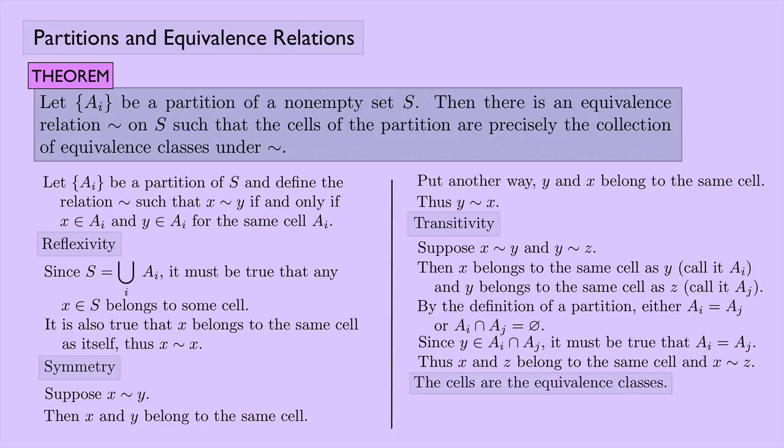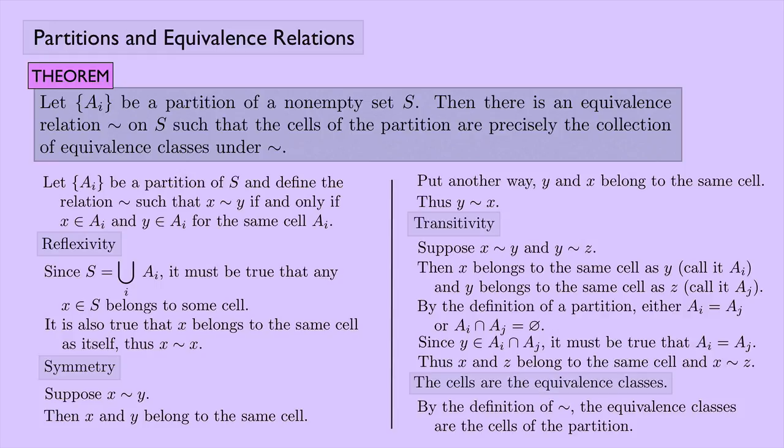One last thing: we should show that the cells are the equivalence classes. This is pretty easy — if you look at the definition of the relation we started with, the equivalence classes are the cells of the partition by definition. So what we've shown here is that a partition is really the same thing as an equivalence relation, and an equivalence relation is really the same thing as a partition.